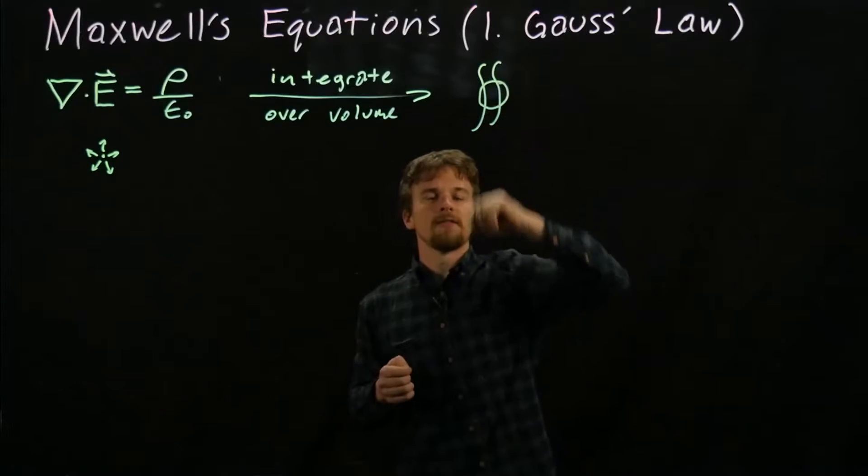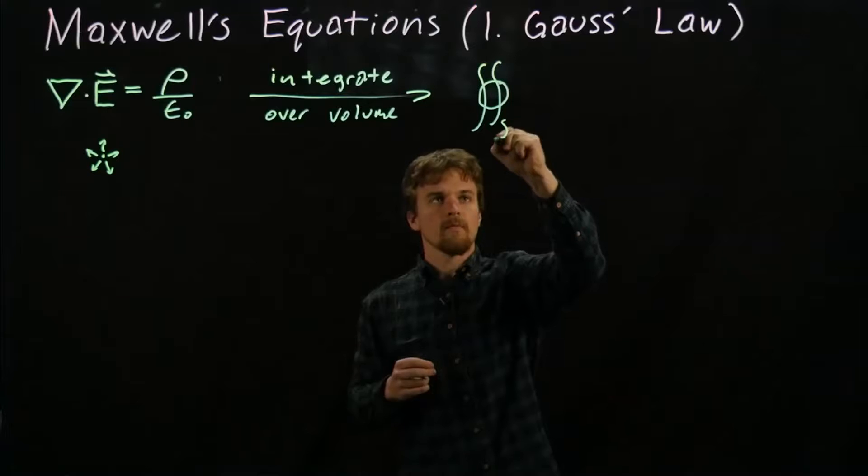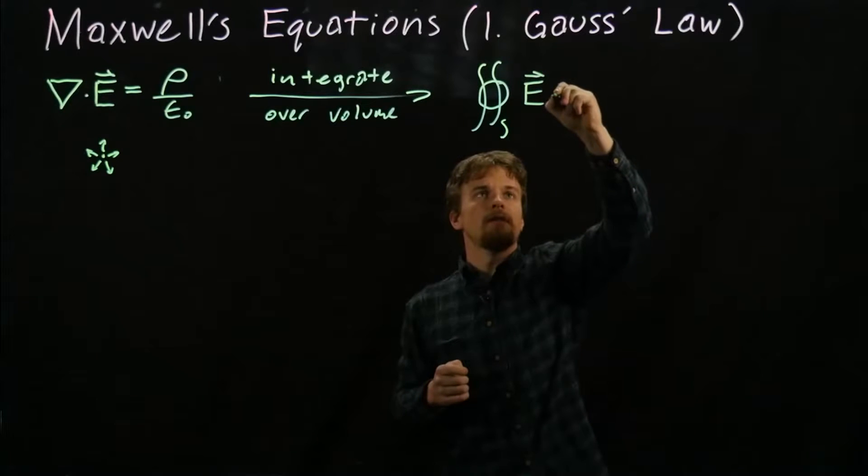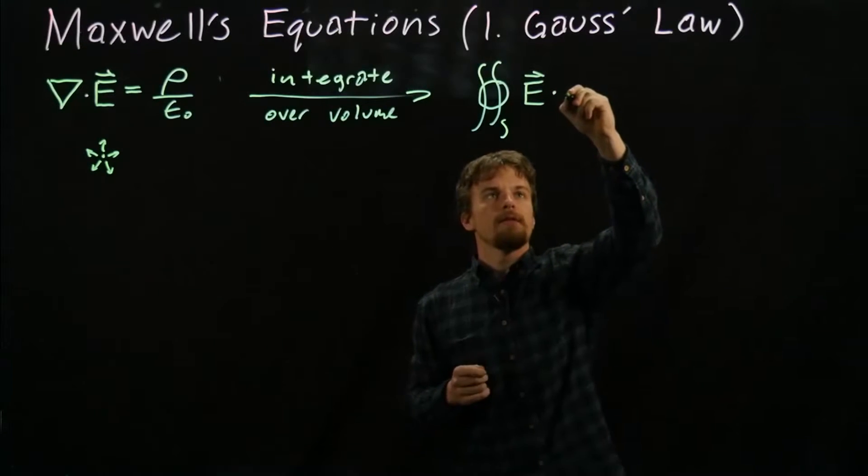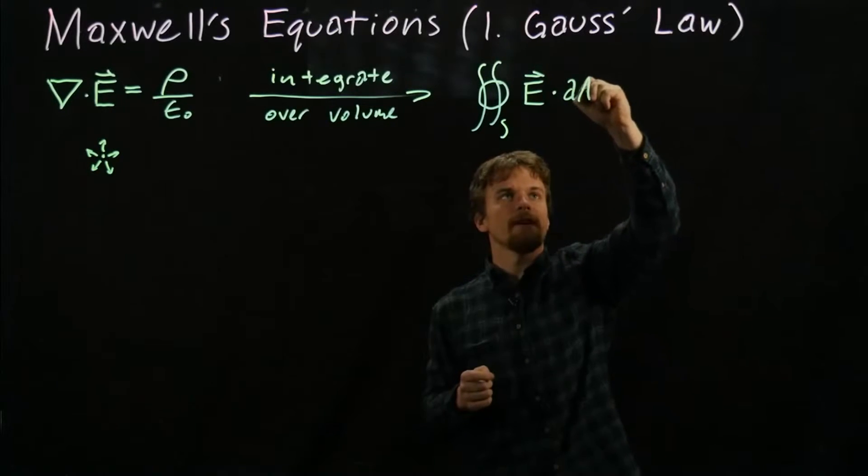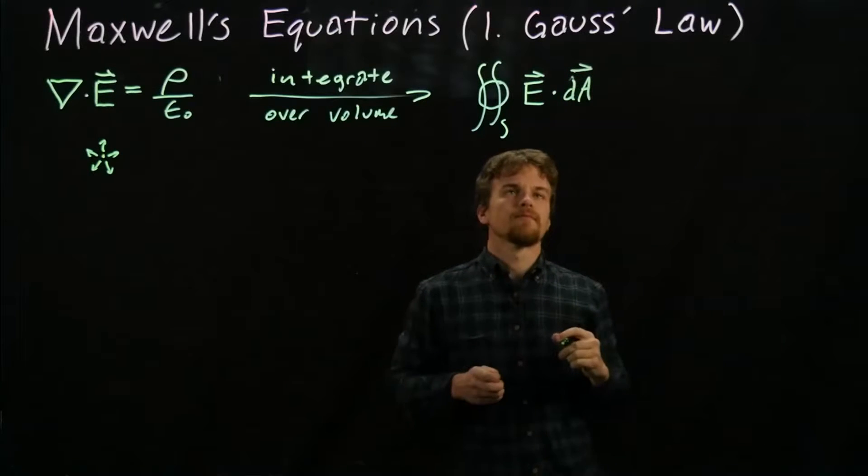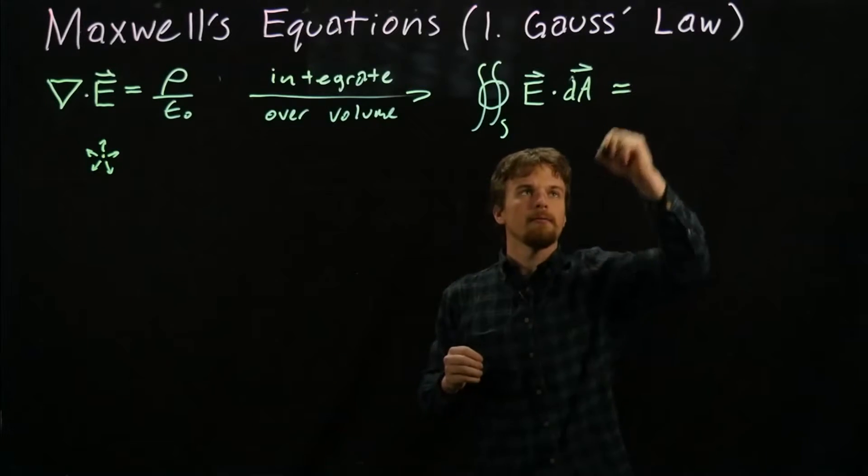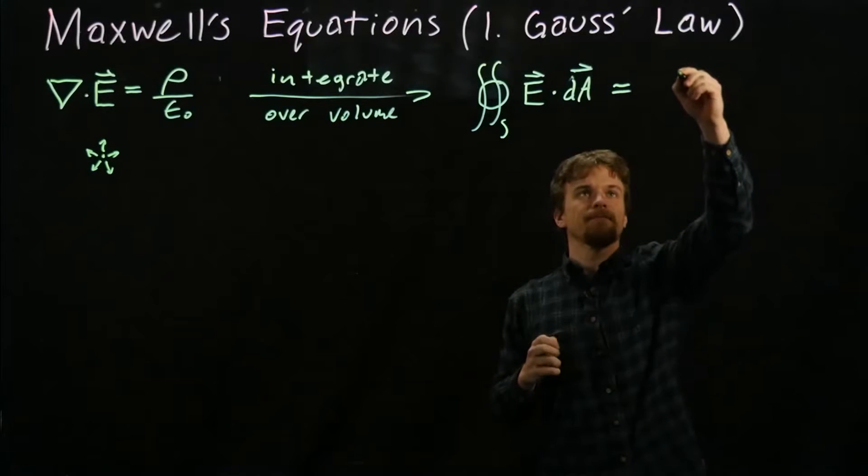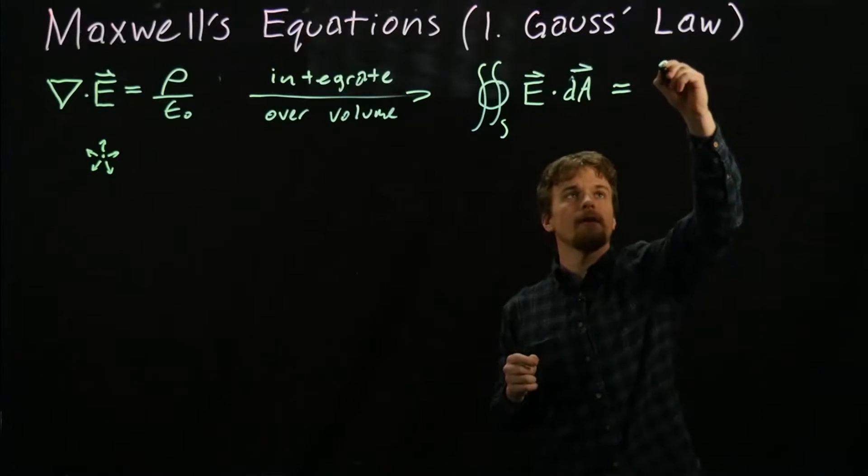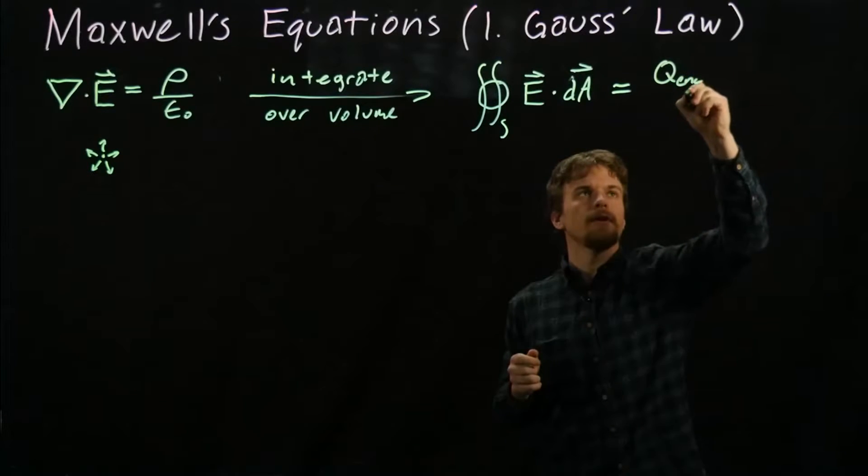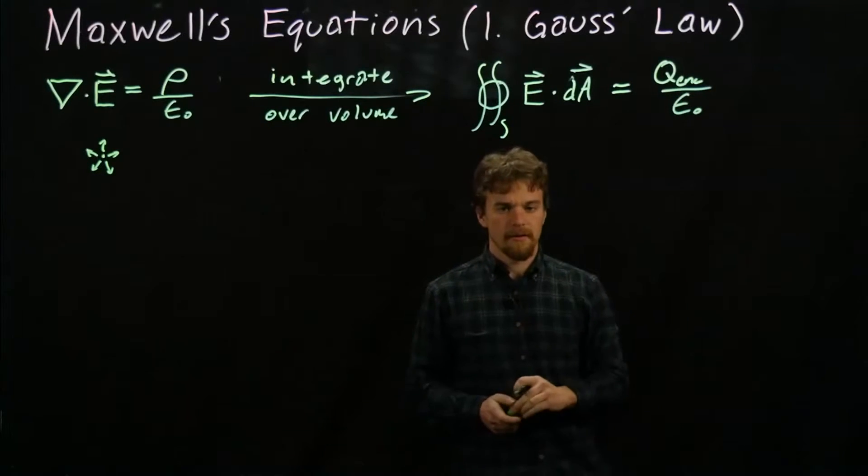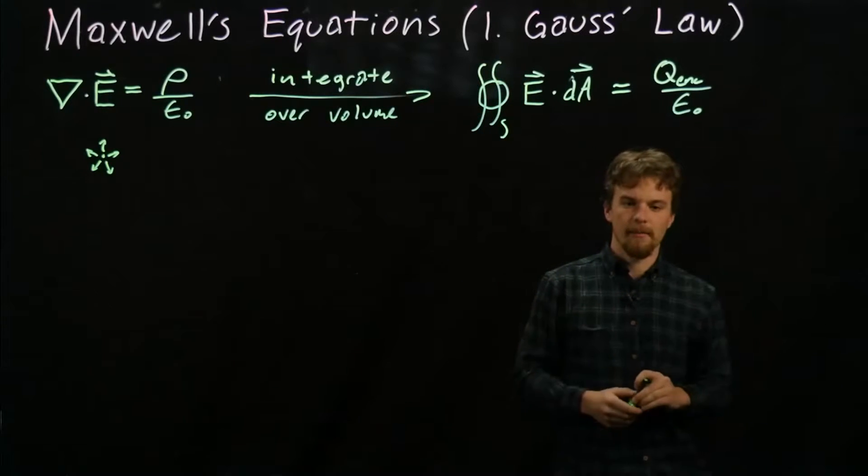When we integrate both sides of this equation over volume, we get that the surface integral over a closed shape of the electric field—the dot product of the electric field with the differential area dA—integrated over volume becomes q_enclosed over ε₀.